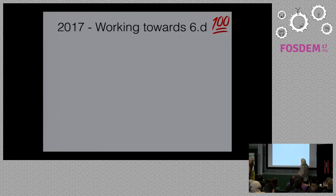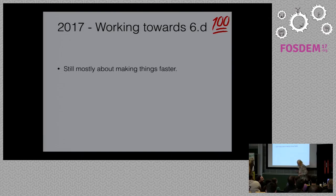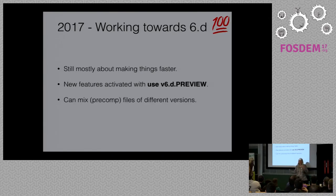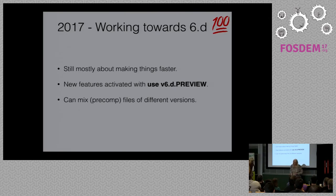What are we going to do in 2017? We're actually going to work towards 6.D — Diwali, some kind of Indian festival. We're still going to be mostly talking about making things faster. We're going to add new features that you actually have to opt in to by saying 'use V6D'. Before we have a V6D, we have a V6D preview. You can mix pre-compiled files from 6.C and 6.D without any problems because each compilation unit has its own level, and you can call code from different levels.